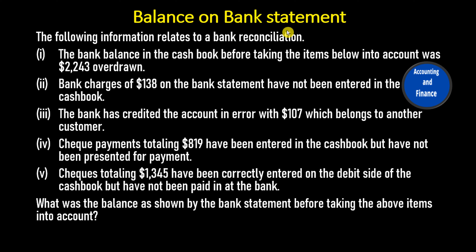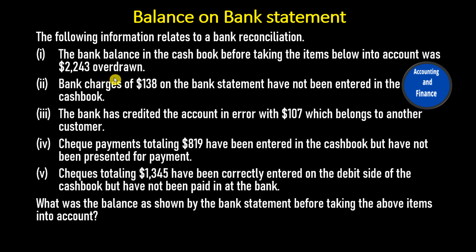Balance on Bank Statement. The following information relates to a bank reconciliation. The bank balance in the cash book before taking the items below into account was $2,243 overdrawn.